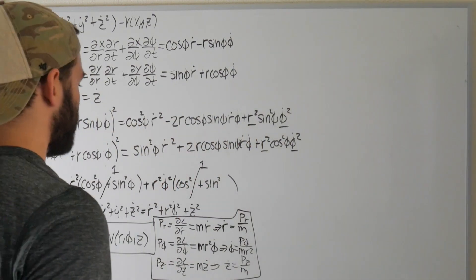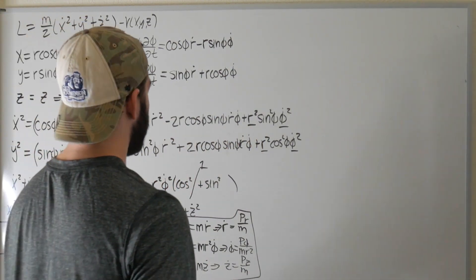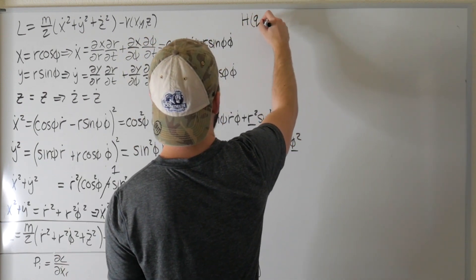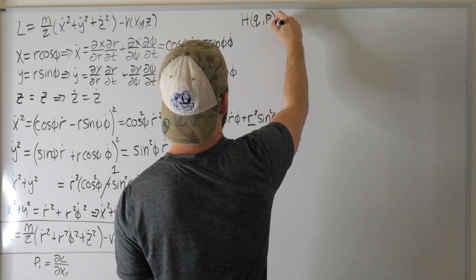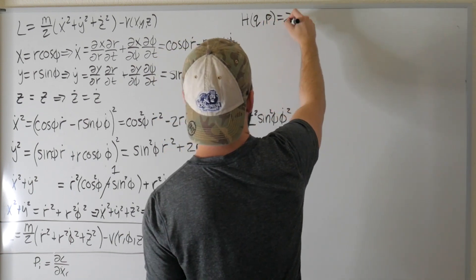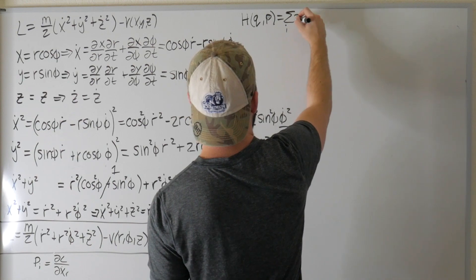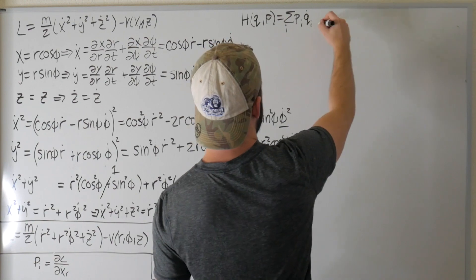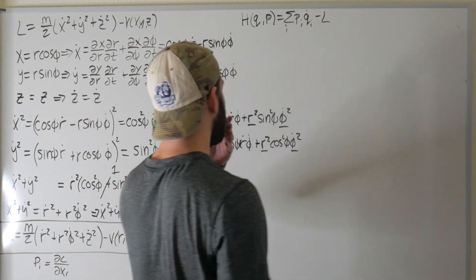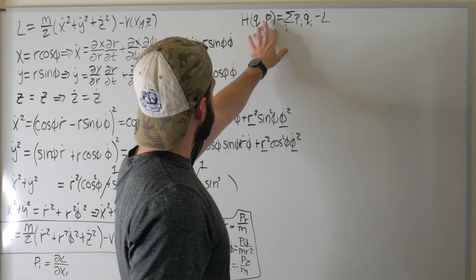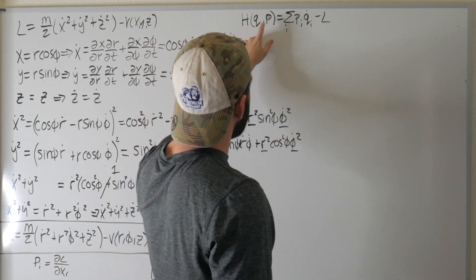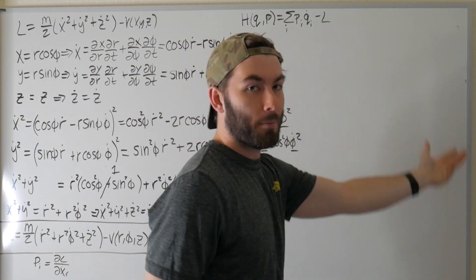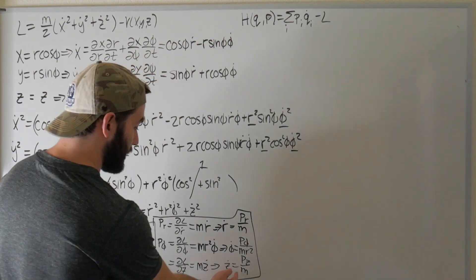The very last step is to calculate our Hamiltonian. The Hamiltonian is a function of our generalized coordinates and generalized momenta, equal to the sum over i of the i-th generalized momentum times the generalized velocity minus the Lagrangian. Since the Hamiltonian is a function of q and p — not q, p, and q_dot — we convert the q_dots into expressions in terms of momenta, which is why we just solved for them.